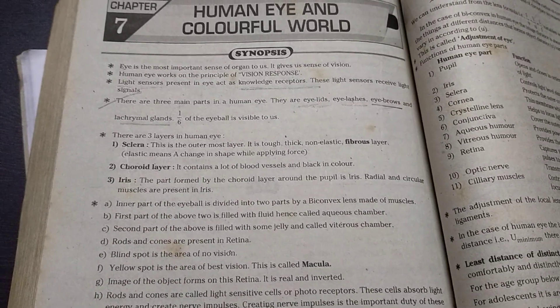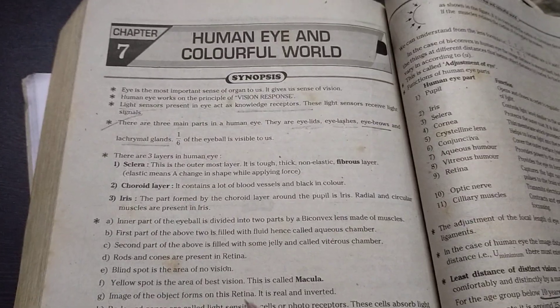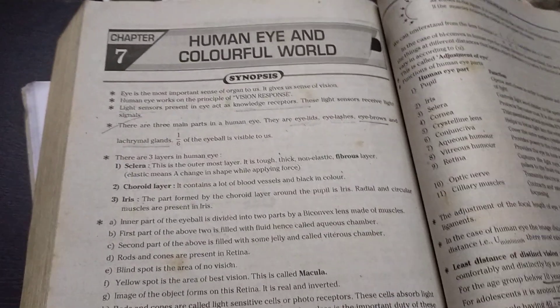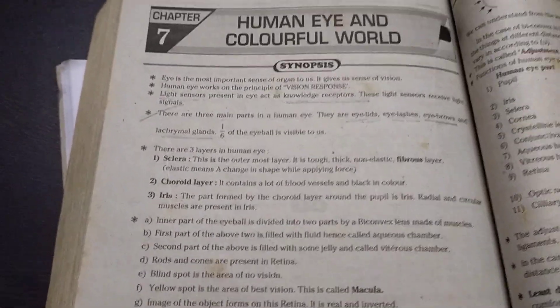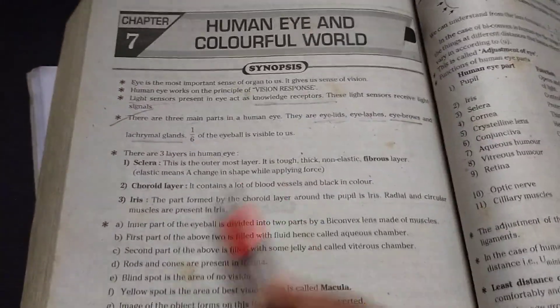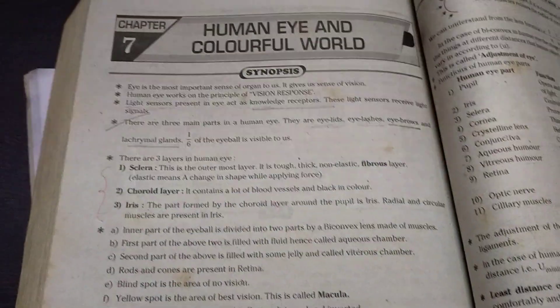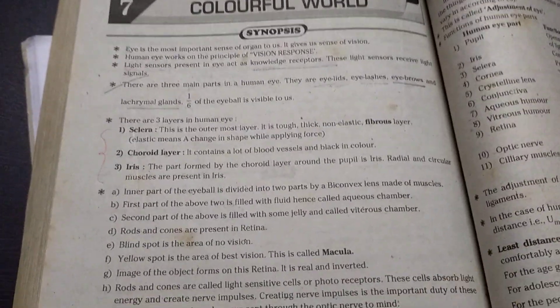Choroid layer. It's nothing but contain a lot of blood vessels and black in color. So iris is the part formed by the Choroid layer around the pupil. Radial and circular muscles are present in iris. So these are the parts of the eye which can protect our eye and we can see any object at any distance.